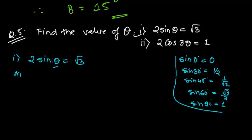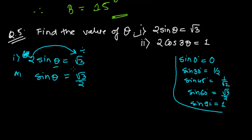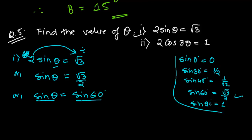In such questions, if you have to find the angle, first you have to convert the numeric value into trigonometric form. So I'm simply moving the 2 to the right side — since it is multiplying, it will be dividing — giving sin theta = √3/2. Now looking at the sine table, sin 60° = √3/2, so I can write sin theta = sin 60°. Therefore, theta equals 60 degrees.